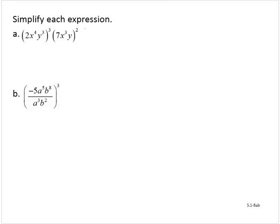Simplify each expression. These next examples are going to combine probably all of the rules that we've seen thus far in this unit. Here we have the quantity 2x to the fourth y to the third raised to the third power, multiplied by 7x to the third y raised to the second power.